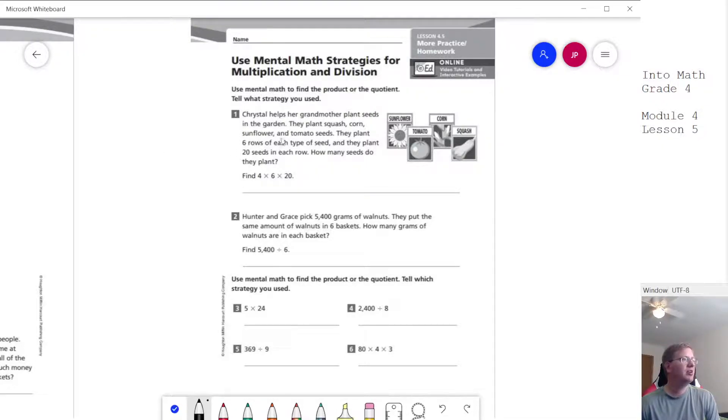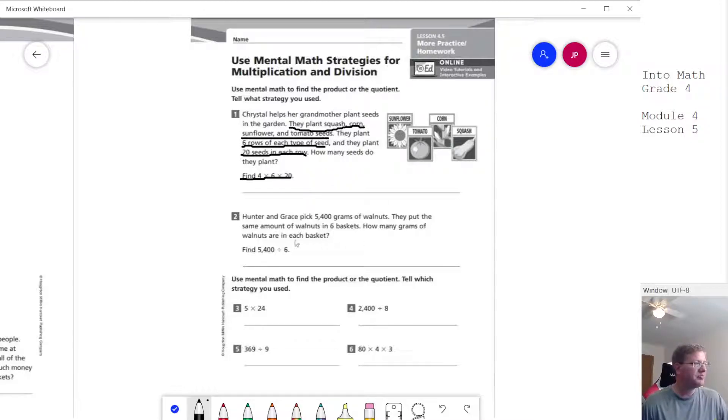So again, we should be underlining our important details. So we are working with four different types of plants that we're planting. We're doing six rows of each type of seed and we plant 20 seeds in each row. That should give us all of our information that we need. We do have this part here to also help us. If we didn't have that, then we would need to deduce that is the problem that we're working with based on the information that they gave us. Again, it looks like they're doing a pretty good job of just giving us problems to help us. So if we're doing a word problem, you still need to underline the information that we need.